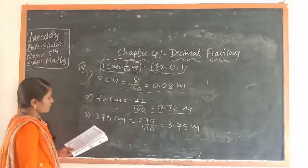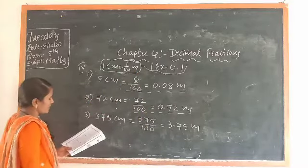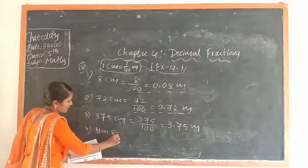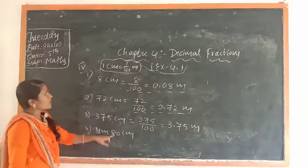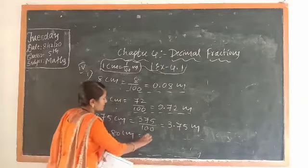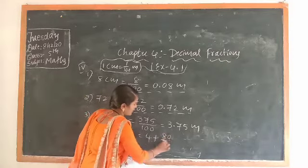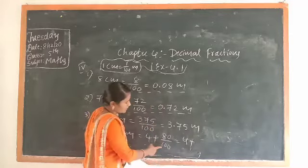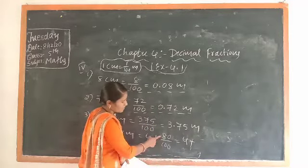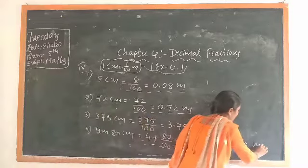Next, the fourth question: 4 meter and 80 centimeter. The meter part stays as is; only convert centimeter to meter: 80/100. So the value is 4 + 0.80 = 4.80 meter. In the fill-in-the-blanks, write 4.80 meter.